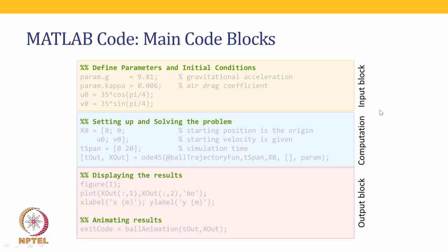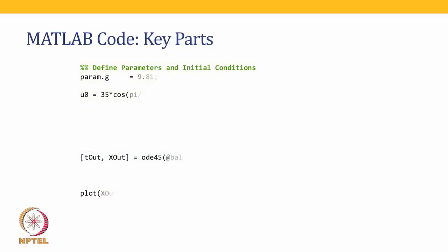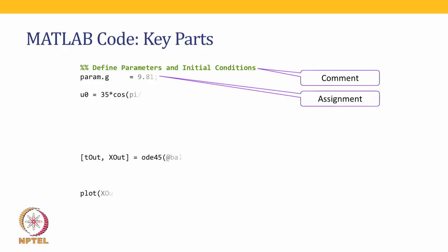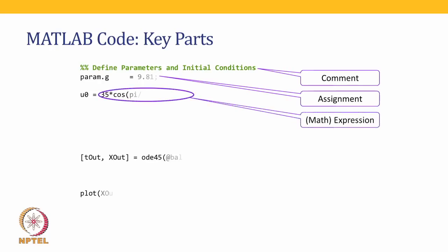The animation is not going to be covered in this course — we will cover the rest. The main parts being highlighted are: first, a comment, which starts with a percentage sign and is colored green in the MATLAB editor. Comments that start with two percentage signs mark the start and end of a section in MATLAB — this is for sectioning to identify structure for humans; MATLAB ignores it. The next thing we see is an assignment, where a variable has a constant or expression assigned to it.